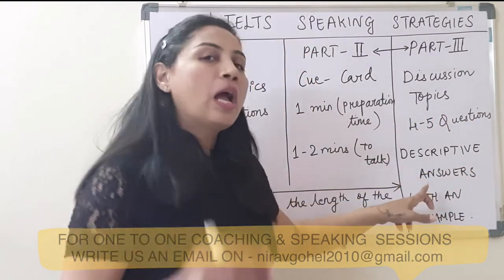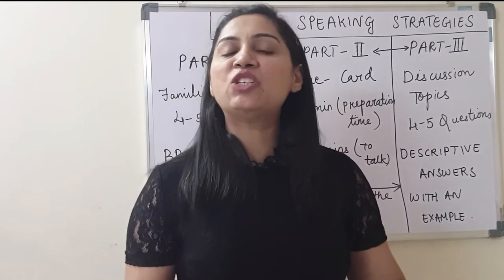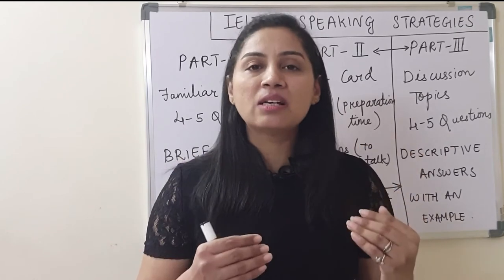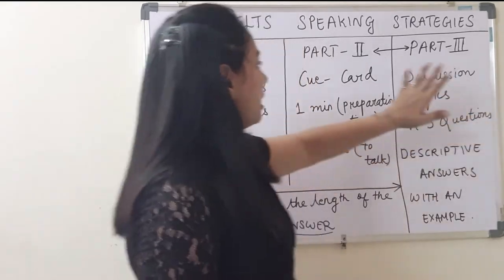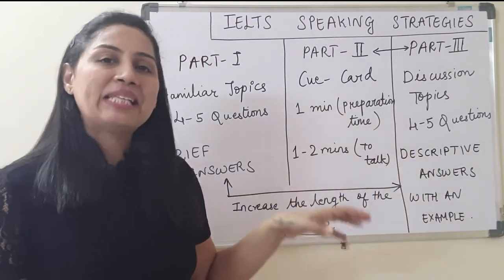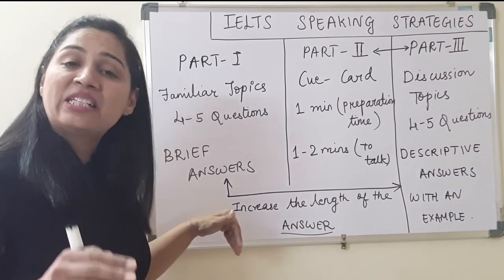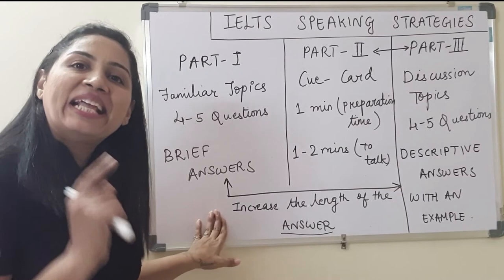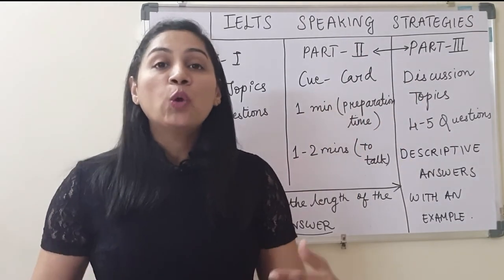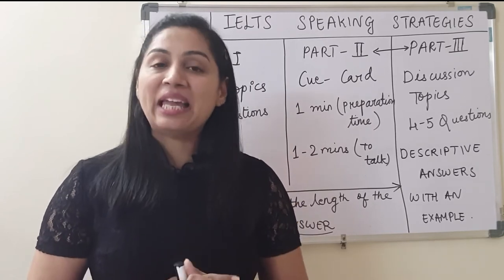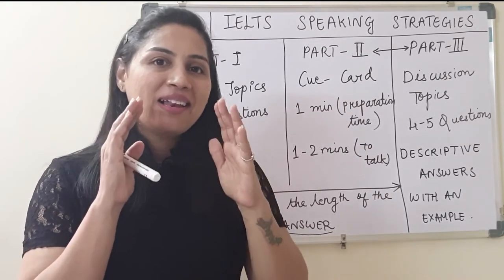Descriptive answers are suggested in part 3, and you can also give examples — not necessarily in every answer, but when the question calls for one, you should include it and make sure the example is exactly related to the answer. When you finish these 3 parts, the whole test is completed in around 11 to 14 minutes. The main strategy to follow is to consider the length of the answer and increase it part by part, effectively attending the IELTS speaking examination with perfect speech, pace, intonation, and appropriate answer length.